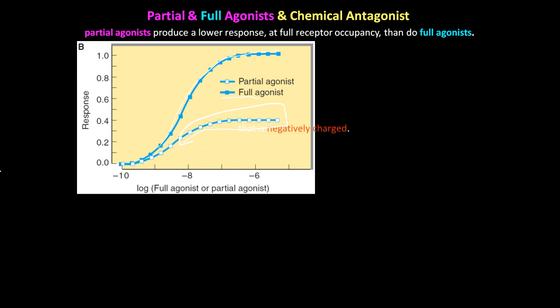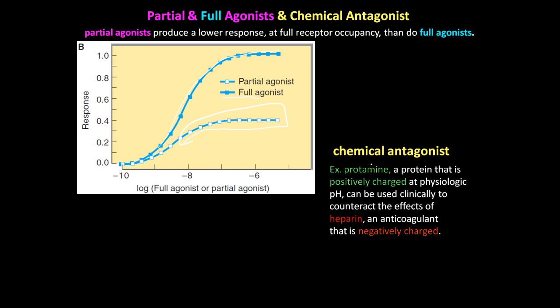The thing we haven't talked about is chemical antagonists. For example, protamine is a drug, a protein that is positively charged at physiological pH, and it can be used clinically to counteract the effects of heparin, which is an anticoagulant that is negatively charged. If I have a blood vessel here and I have positive and negative charged molecules, they're going to bond together. These guys are going to stick together and become inactive. So you're going to have an inactive molecule. That's it, so we'll see you in the next video.